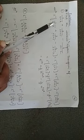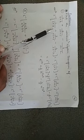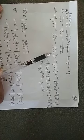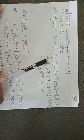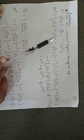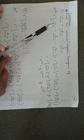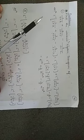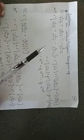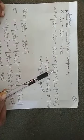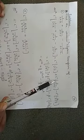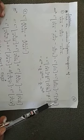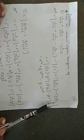Therefore, L inverse of 1 upon s plus 2, plus 3 upon 2s plus 5, minus 4 upon 3s minus 2. Since plus and minus signs are there, split the terms: L inverse of 1 upon s plus 2, plus L inverse of 3 upon 2s plus 5, minus L inverse of 4 upon 3s minus 2.